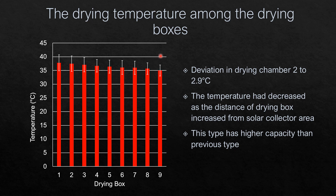Since the dryer has 9 drying boxes along the tunnel, we also evaluated the temperature among them. The average drying box temperature was 35.6 degrees centigrade, with deviation among the drying boxes of about 2 to 2.9 degrees centigrade, so we can say that the drying temperature along the tunnel was uniform. The temperature decreased as the drying box number increased, because those boxes are positioned farther from the solar collector area. In this design, we improved the drying capacity of the dryer by reducing the solar collector area.